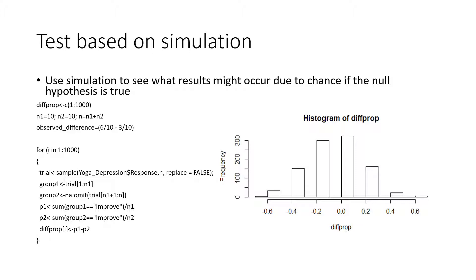Our test is based on simulation, and what we're going to do is use simulation to see what results might occur due to chance if the null hypothesis is true. I have the R code that I used to do this over here on the left-hand side. Essentially what it is doing is taking the data — I have the responses — and it's sampling them so that the responses are coming out in a different order.